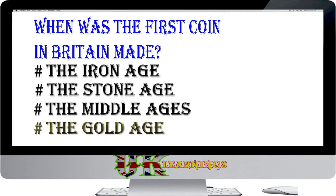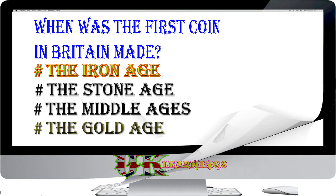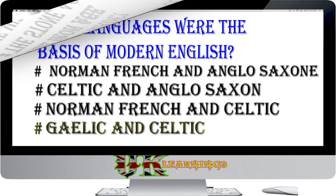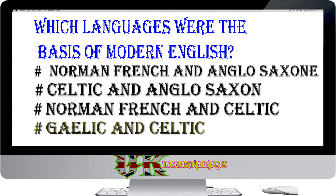When was the first coin in Britain made? Options: The Iron Age; The Stone Age; The Middle Ages; The Gold Age. The answer is The Iron Age. The Iron Age people made the first coins to be minted in Britain, some inscribed with the names of Iron Age kings.